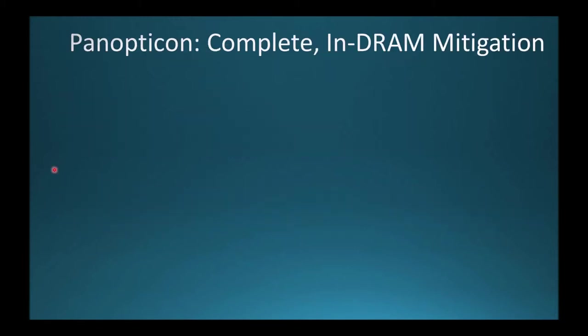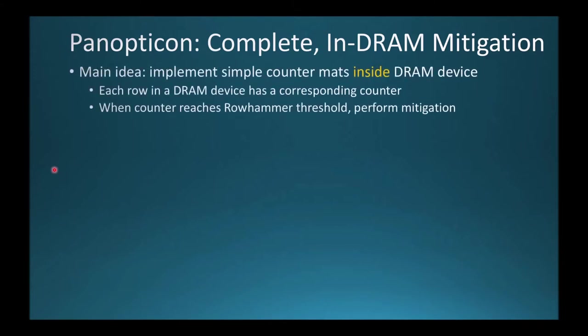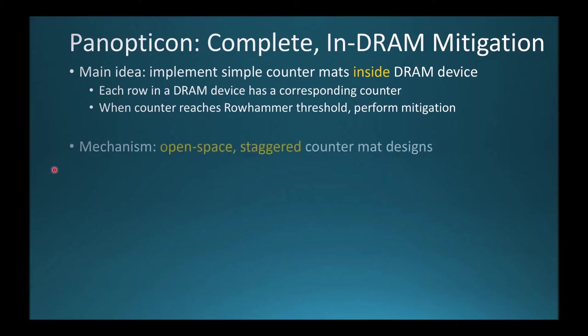This paper presents Panopticon, a complete Rowhammer mitigation that is both inexpensive, and in the case of DDR4 requires no changes to any hardware components other than DRAM. Panopticon monitors all row activations inside the DRAM itself. The main idea is to implement simple counter mats inside DRAM devices such that each row in DRAM has a corresponding counter. When the counter reaches the Rowhammer threshold, Panopticon performs a mitigation. The main mechanism is the use of an open-space, staggered counter mat design that leaves ample space for the counter increment logic, all done in DRAM.